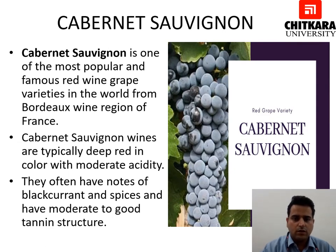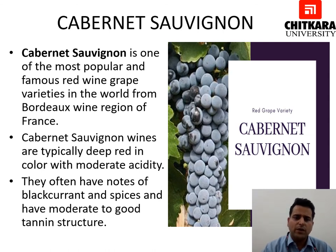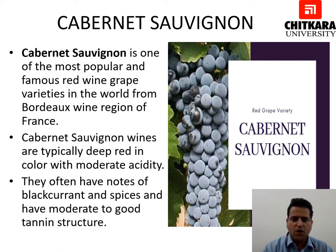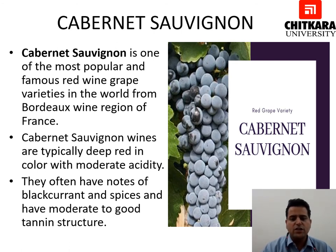The first variety of red grapes is Cabernet Sauvignon, which is one of the most popular and famous red wine grape varieties from the Bordeaux wine region of France. Cabernet Sauvignon wines are typically red in colour with moderate acidity. They often have notes of black currant and spices, and have a moderate to good tannin structure. Bordeaux produces one of the best red wines on the planet.